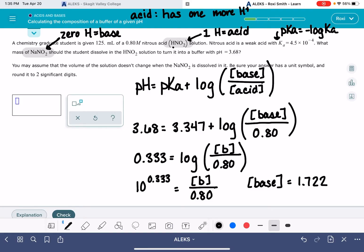This right here is not the answer to the question. That is the molarity of the base that we need for this particular solution. We need 1.722 molar NaNO2, which is another way of saying 1.722 moles per liter of solution.